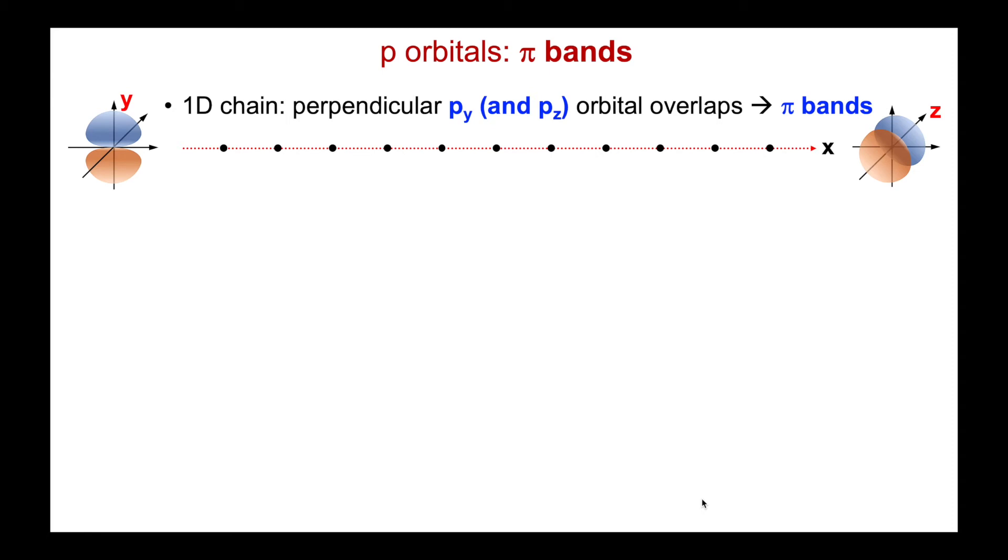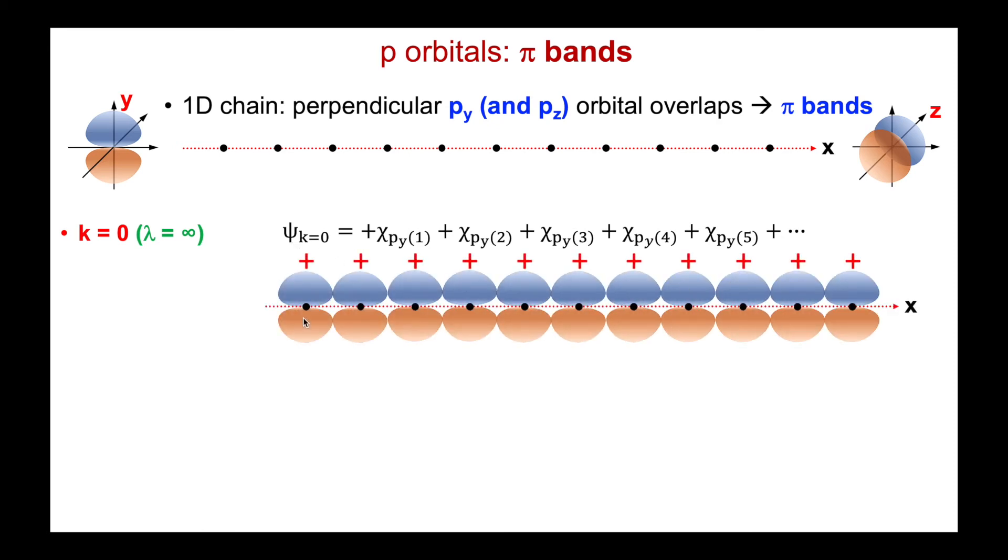We have two other p orbitals to deal with in our linear chain of atoms. The py and the pz, which are both perpendicular to by bond axis, which we selected as the x-axis. And so in this case, interactions between neighboring py or pz orbitals will be of a pi character, and I'll get pi bands. Let's select the py orbitals. The pz's will be doing the same thing. Let's take the case for k equals zero, where there's no sign changes. Now we see it's back to the similar case for the s orbitals. At k equals zero, now my py-pi interactions are bonding when there is no sign change. And so they're all bonding at k equals zero. It's going to be the lowest possible energy.